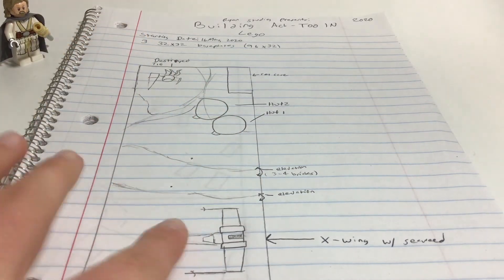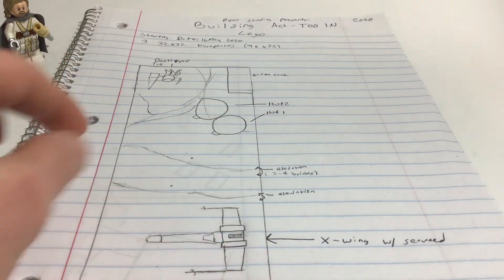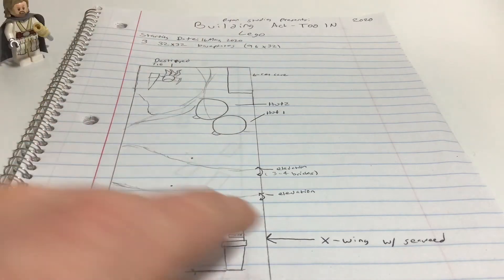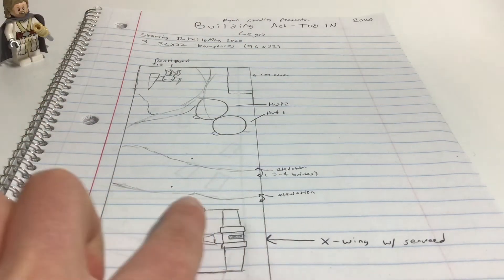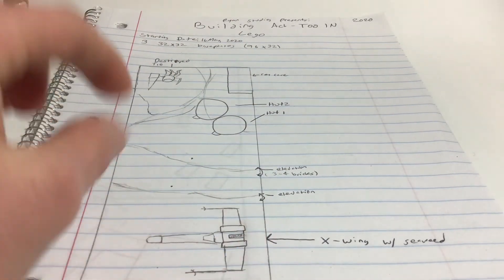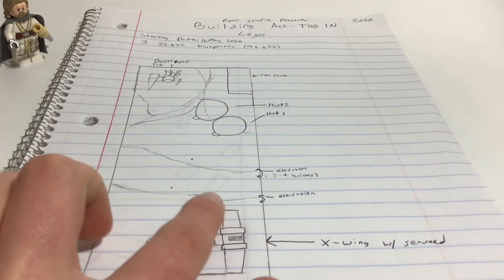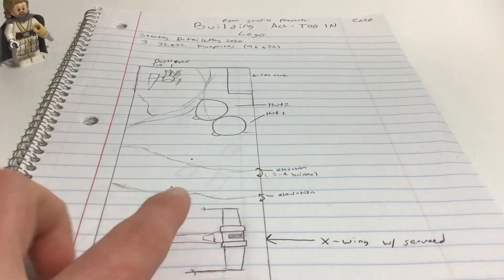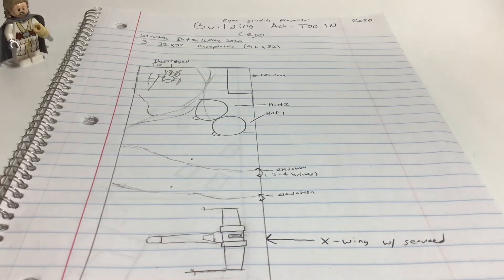Here, right here, this area is gonna be water, so that's gonna be pretty cool. And these lines just have elevation. I don't know how much elevation is gonna be from here and up, we're gonna figure that out as we go, but I know from here to here is gonna be about three or four bricks high.